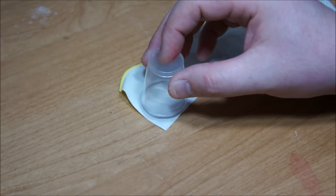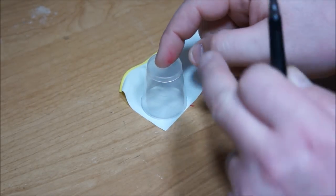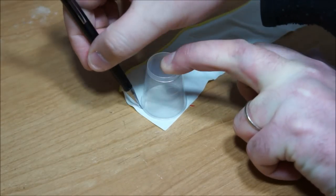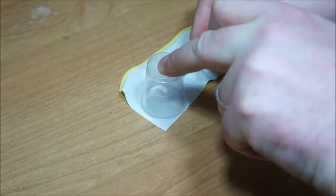To mark out the whip tail I'm going to place my little medicine cup just on the edge and draw around it. The diameter of this is about an inch and a half, 40mm.